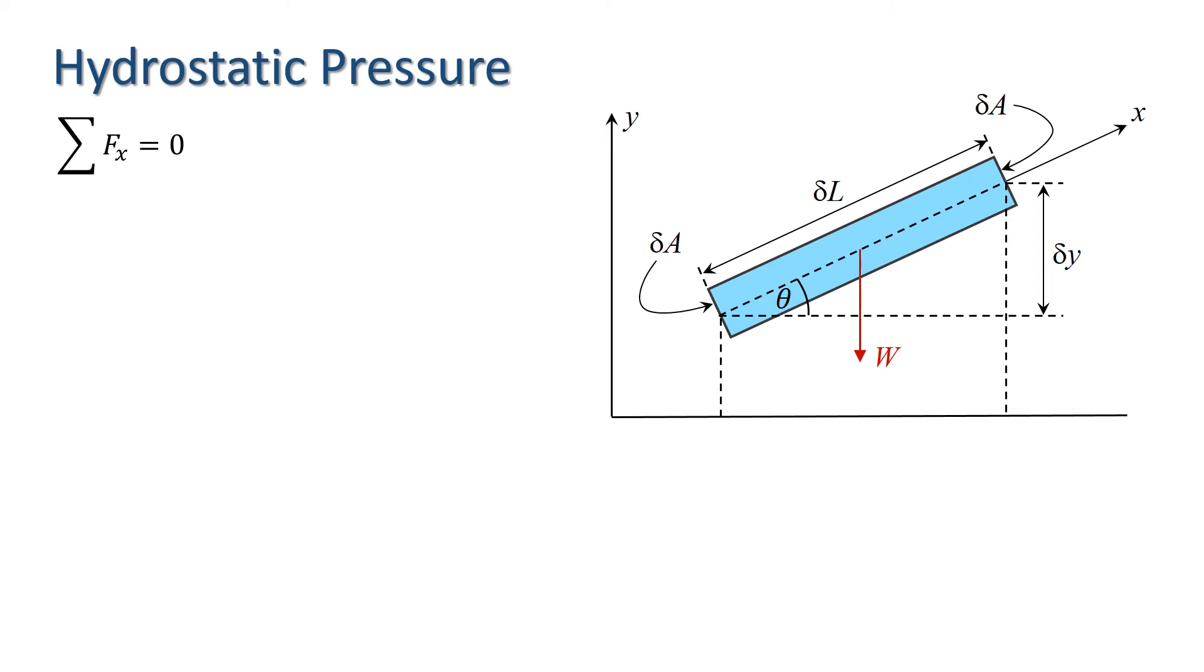So, what are the forces? Well, there's the weight of the fluid, which is denoted W here, and there are the pressure forces at the ends of the cylinder. Remember, we know that the forces are perpendicular to the surface of the cylinder, so the pressure forces along the length won't contribute to the forces in the x-direction. I'll label the pressures at either end as P and P plus delta P.